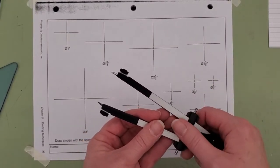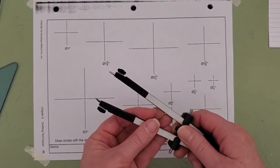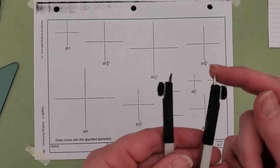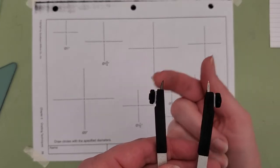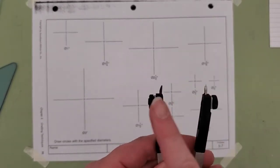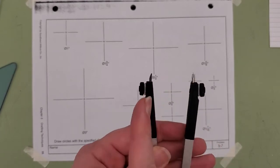Additionally, you have one sharp pointed end and one graphite end that is sharpened to a chisel point. The chisel should be closer, it should be coming inward toward the center towards where they meet.